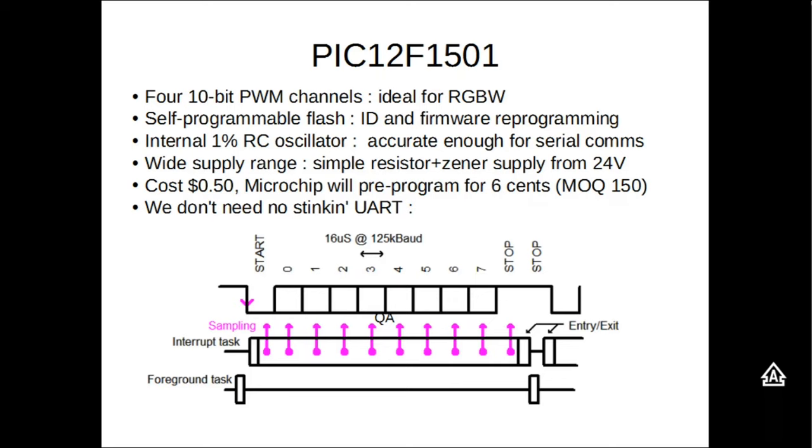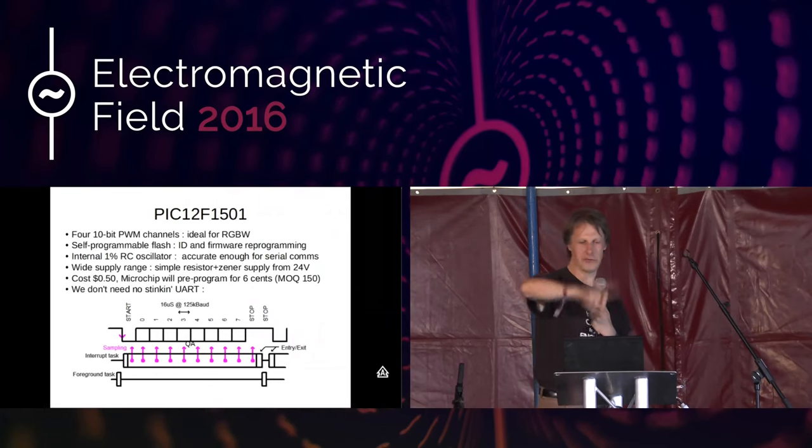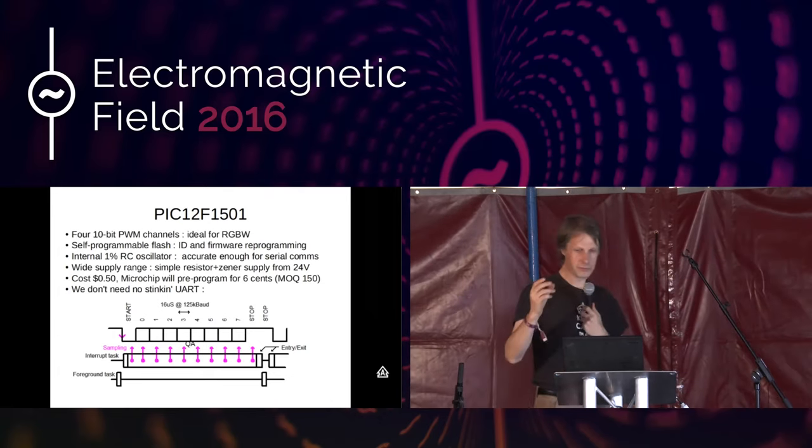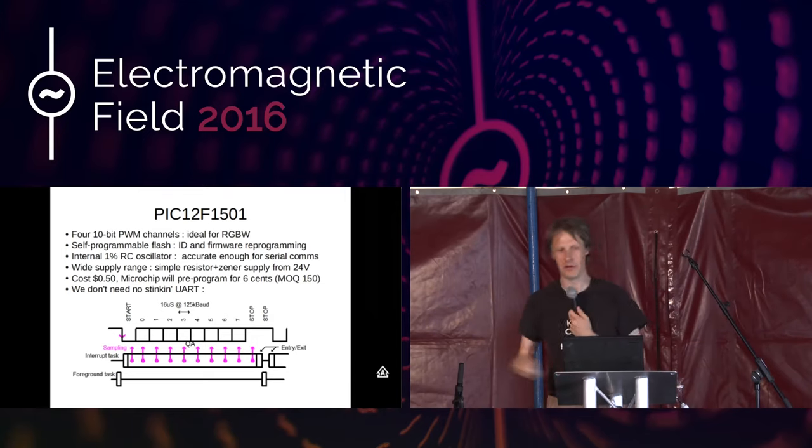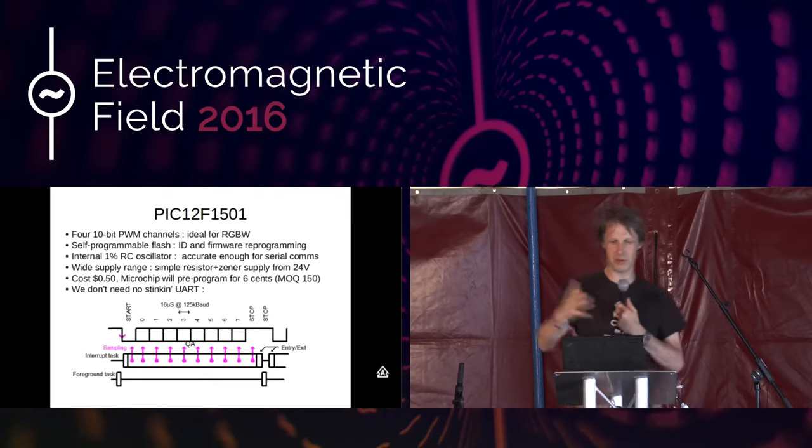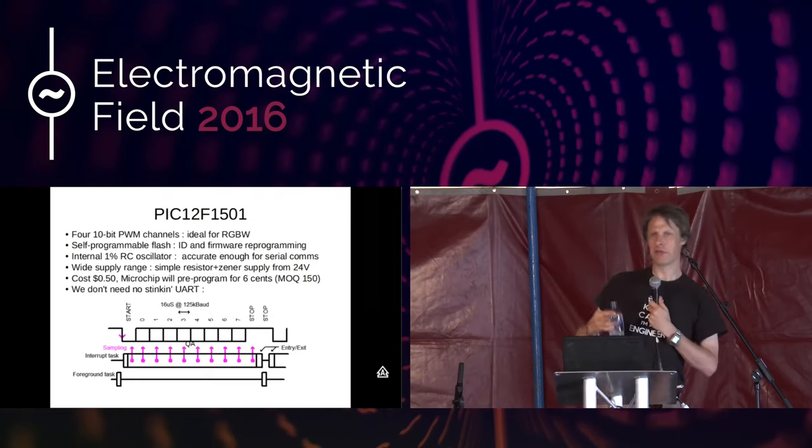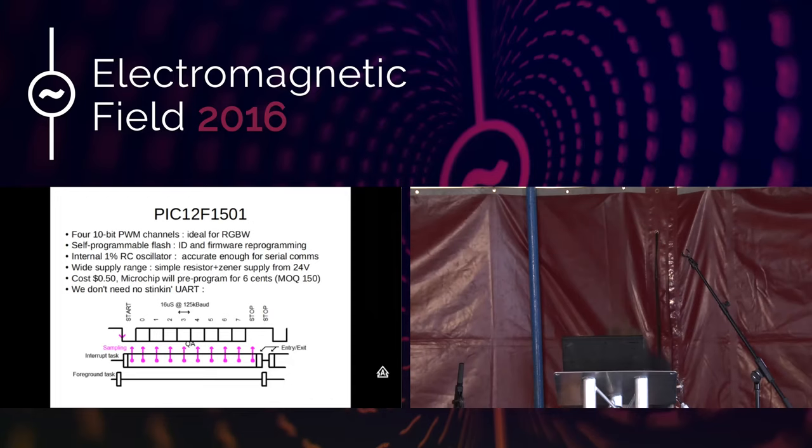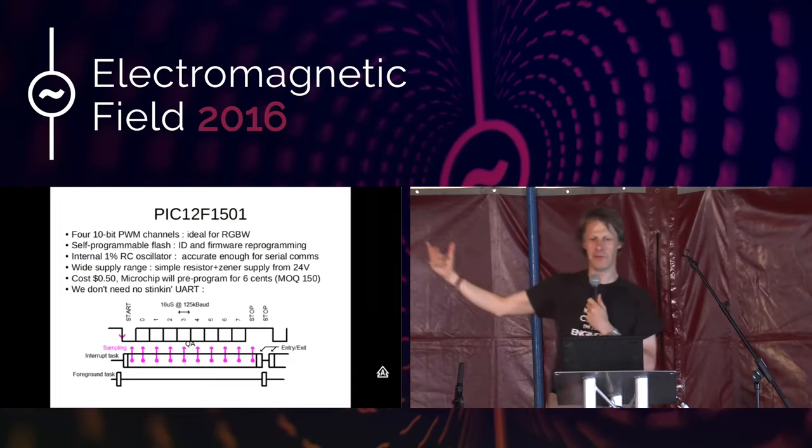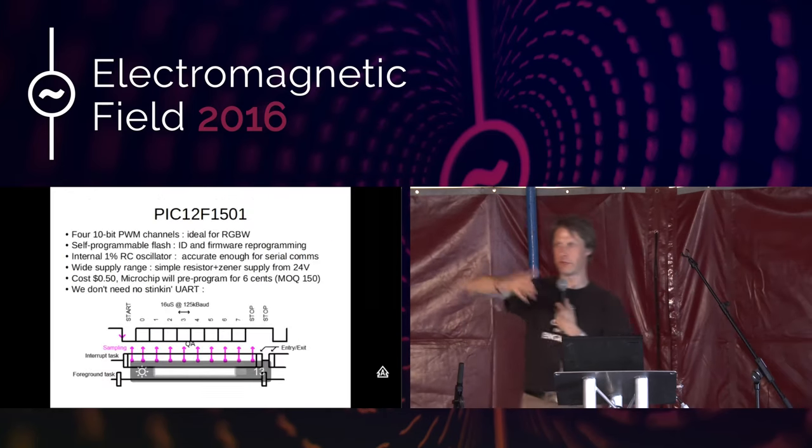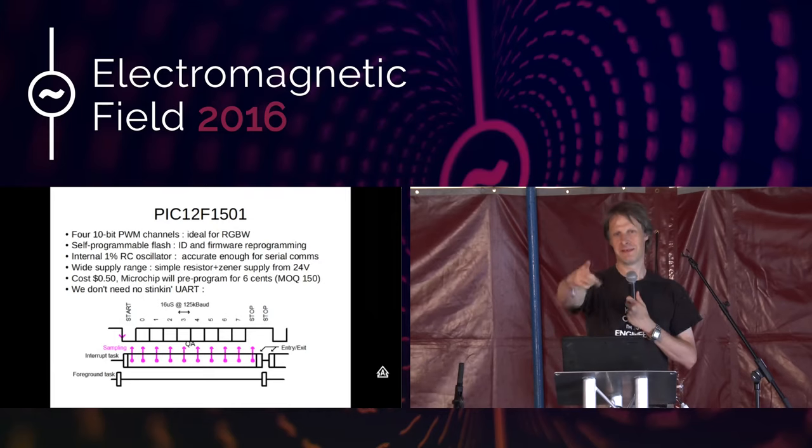Some other nice features. It's got self-programmable flash, which means that we can upload the firmware over the cable, so this entire installation, if we needed to, we could upload the firmware in every single PIC. There's 60 PICs per snowflake. The total was about 14,000 strips in the entire installation. Also, it can hold a device ID. It hasn't actually got EEPROM, but you can self-program the flash to achieve the same thing. It's got an internal oscillator that's accurate enough to do serial communication, so that's one less component we need to deal with. It's a 5-volt part. It'll run from 2.5 up to 5 volts, so we don't need a precision voltage regulator. We just have a resistor and a zener diode to go from our 24-volt supply to our PIC.